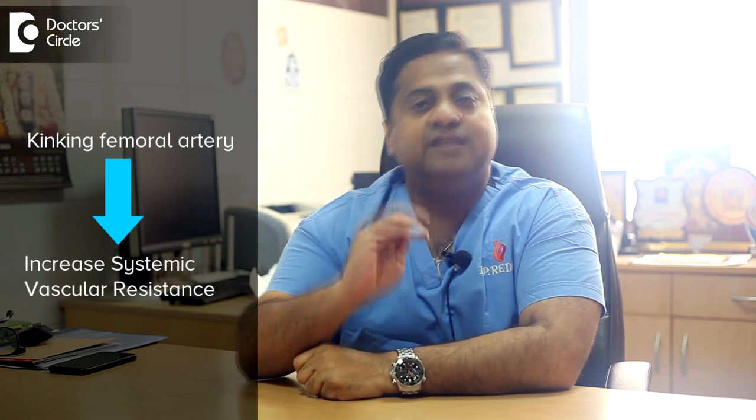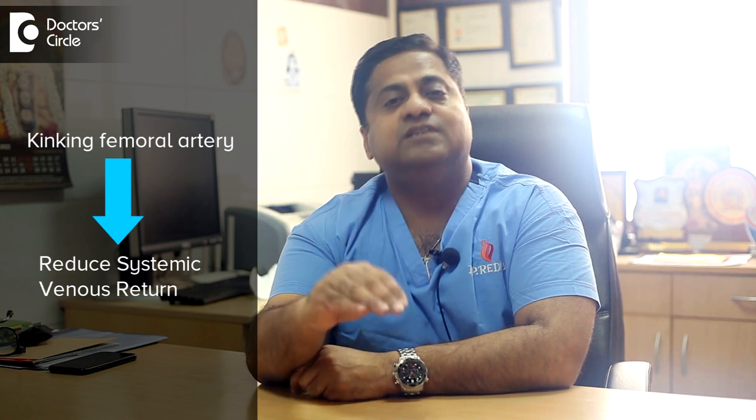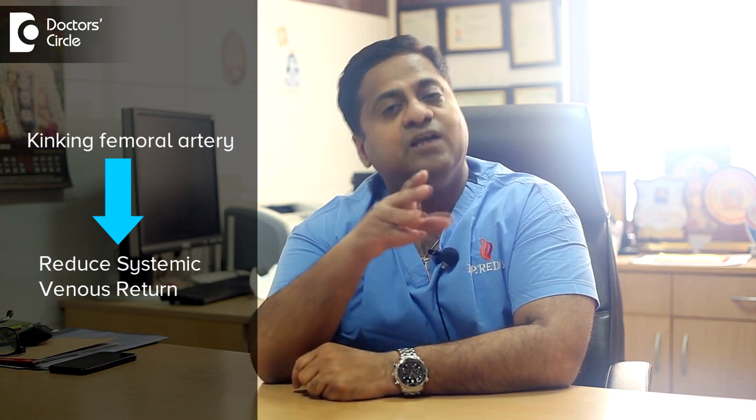How do we manage TET spells is very important — we need to break the cycle. In smaller children, we hold the child in a knee-chest position. That means you hold the knee so that the knee comes to face the chest. The moment you do that, the femoral artery and femoral veins are kinked. By kinking the femoral artery, you increase the systemic vascular resistance, and by kinking the femoral vein, you reduce the systemic venous return. By doing this, you allow blood to enter the pulmonary artery and reduce the entry of blood into the aorta, reversing the TET spells.